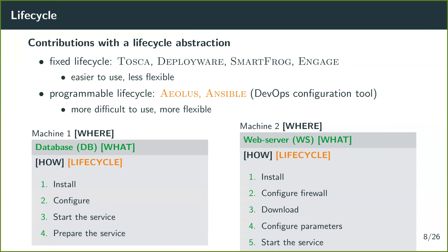For example, consider a database and a web server, each deployed on a different machine. The lifecycle typically involves steps to install, configure, and start the service — or prepare the service — for the database. Similarly for the web server, with additional milestones such as downloading website contents or configuring the firewall.